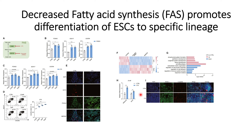These findings about pancreatic lineage differentiation were also validated using immunostaining of NKX6.1 and C-peptide, which are markers for pancreatic lineage. Both NKX6.1 and C-peptide are increased in C75-treated cells compared to control. This confirms that decreased fatty acid synthesis helps increase differentiation of embryonic stem cells towards a particular lineage.